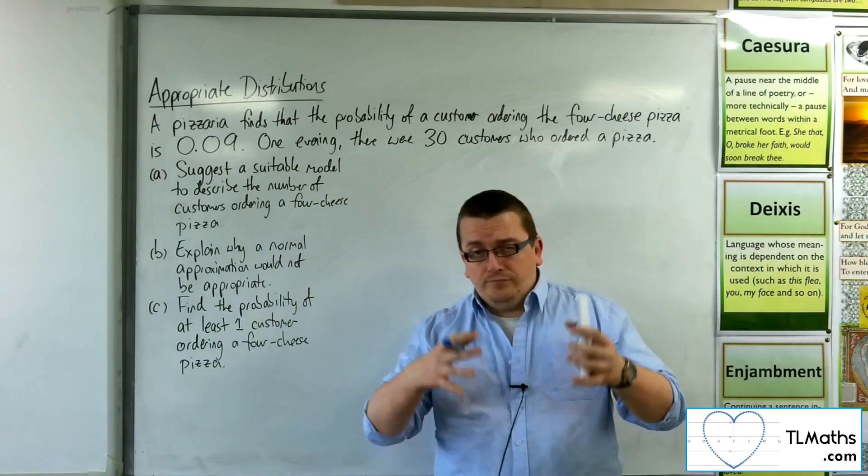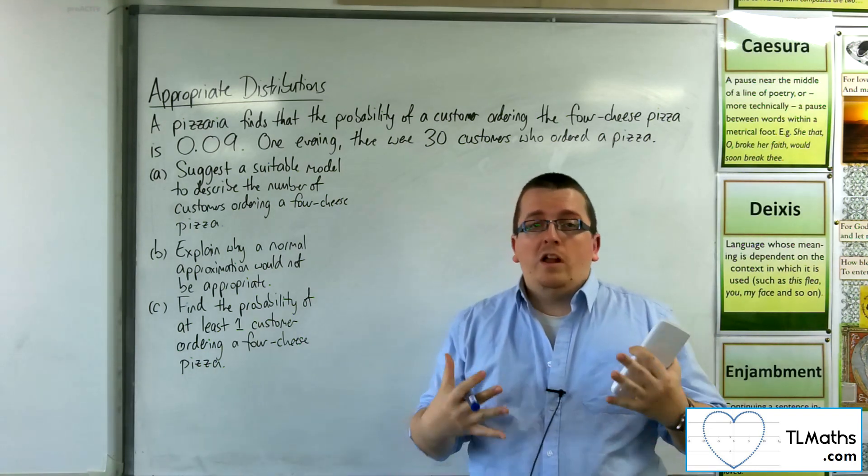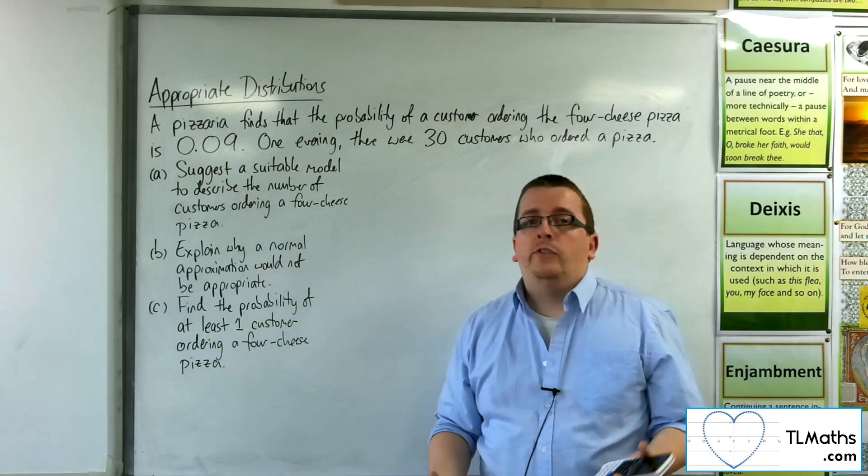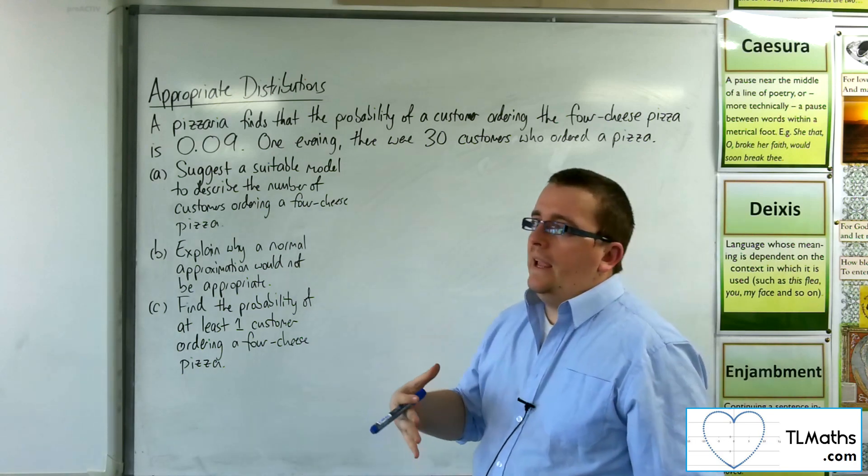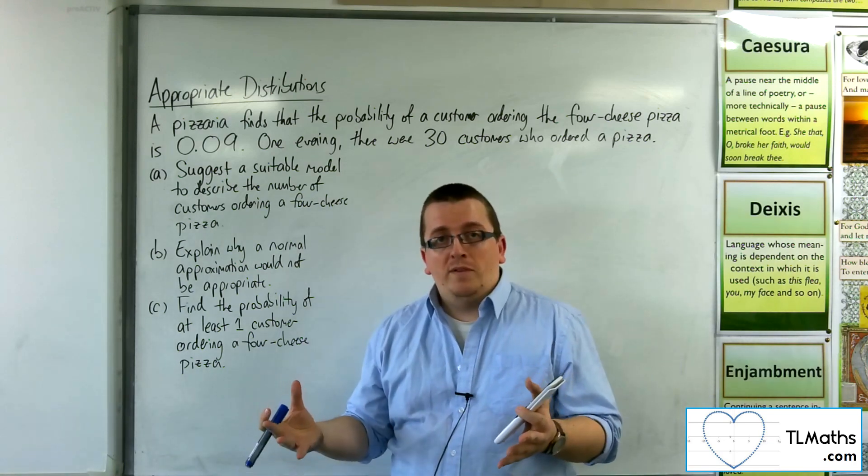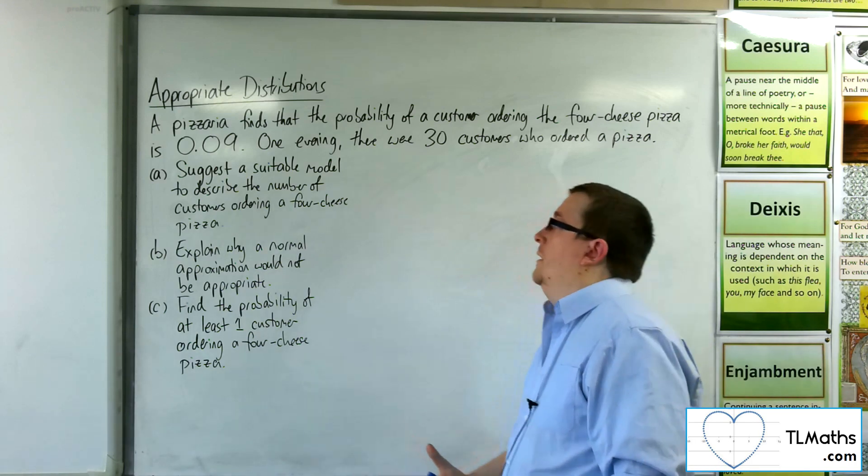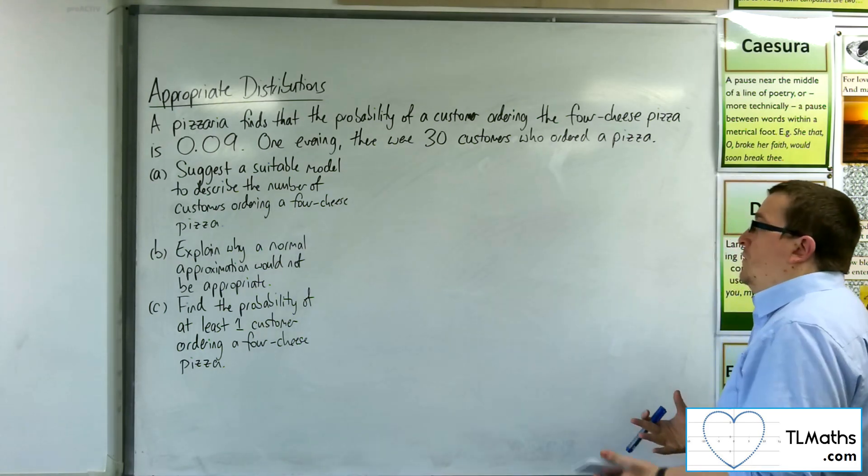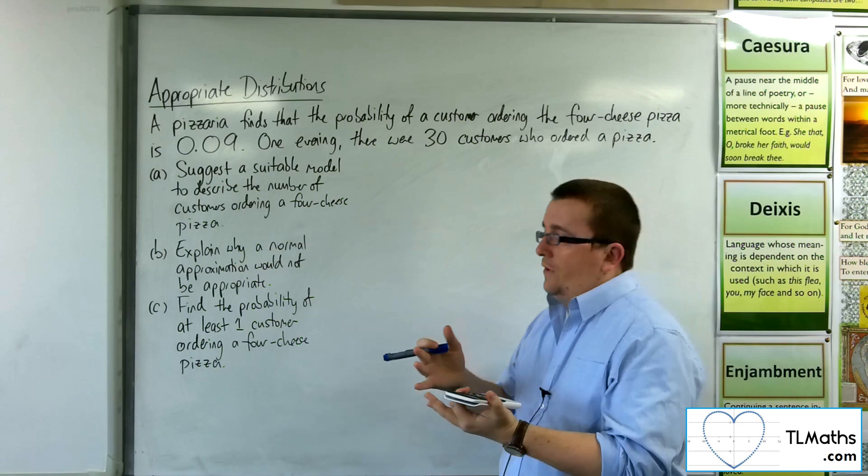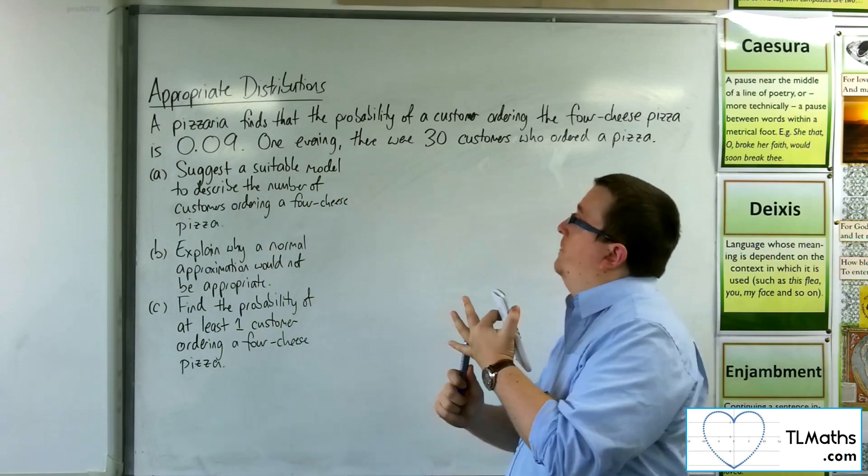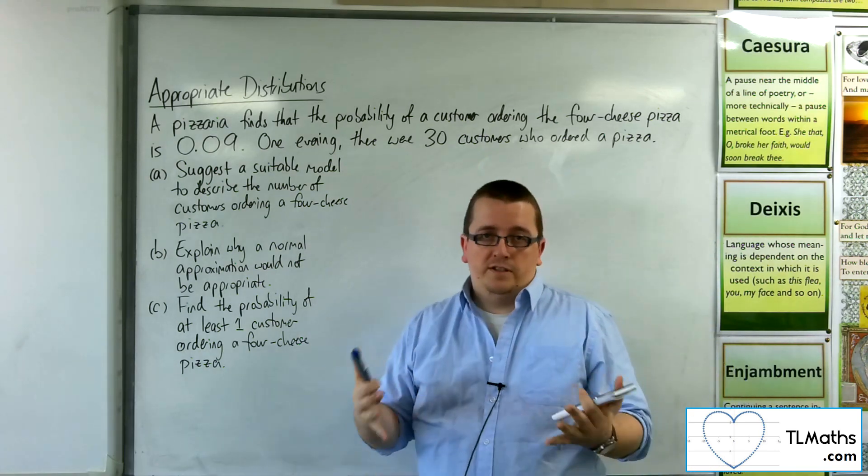In this section we are looking at appropriate distributions, looking at whether the distributions that we've looked at, the binomial distribution or the normal distribution, are appropriate. Now, this one, we just need to look at what we've been given. We've been given a probability, p, and we've been given a number of customers, 30.